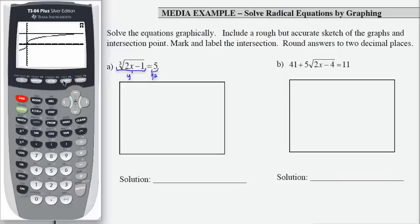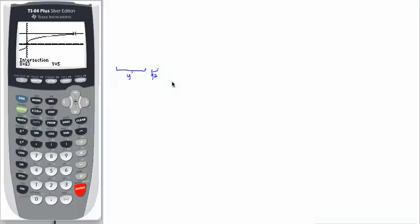So I'm going to say 2nd calc 5 and I'm going to press enter then 3 times until I see the word intersection here. So the intersection is at 63 comma 5.